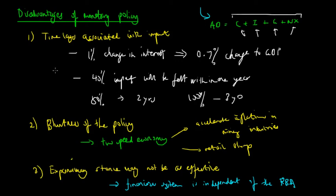So there are the three major disadvantages to monetary policy. Firstly, the time lags associated with the impact of the policy after policy changes. Secondly, the bluntness of the policy in that it affects the entire economy. And thirdly, how expansionary monetary policy may not be as effective as contractionary monetary policy when expansionary stances are adopted to stimulate growth. And this is because the financial system is deregulated from the RBA or the central bank, so that they have no obligation to pass on interest rates to consumers and businesses.